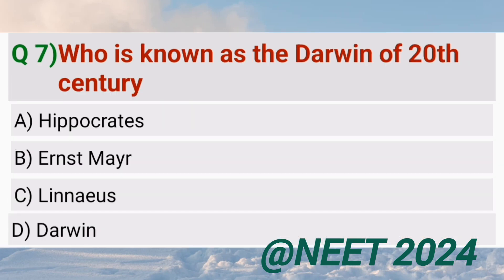Who is known as the Darwin of the 20th century? Ernst Mayr.